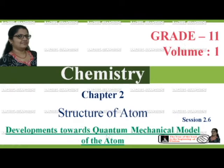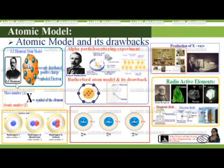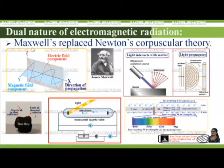Before getting into today's concept, let us recall all the topics discussed in previous sessions. In session 2.1 we discussed the discovery of subatomic particles and their characteristics. In session 2.2 we discussed J.J. Thomson's atom model and its drawbacks. In session 2.3 we discussed the dual nature of electromagnetic radiation, black body radiation, photoelectric effect, and electromagnetic spectrum.